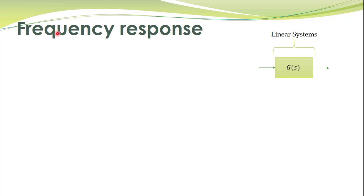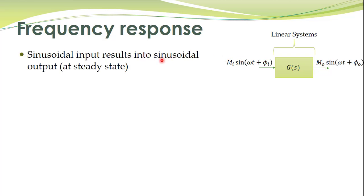Next we should know what frequency response is. Linear dynamic systems can always be modeled by a transfer function — linear systems are modeled by linear differential equations from which transfer functions are obtained. Linear systems have one key property: when you apply a sinusoidal input to the system, the output is also sinusoidal at steady state. That is, you apply a sinusoidal input with amplitude m_i, phase angle φ_i, and frequency ω, and the output is also a sinusoid.